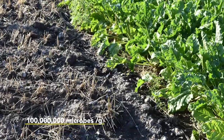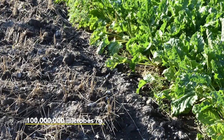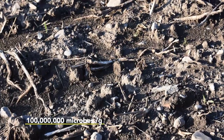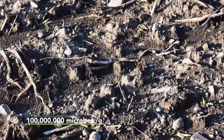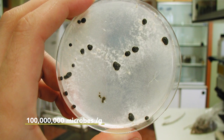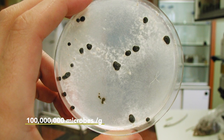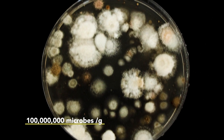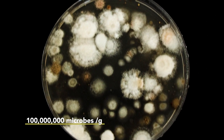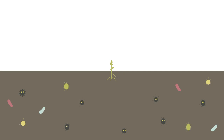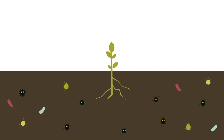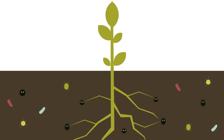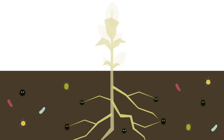One gram of soil contains more than 100 million microorganisms, predominantly bacteria but also actinomycetes and fungi. Most of them are saprophytes, which means they break down dead organic matter. But a small number can infect living plants and cause soil-borne plant diseases. These are usually referred to as soil-borne pathogens.